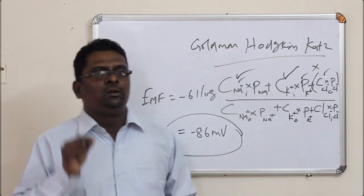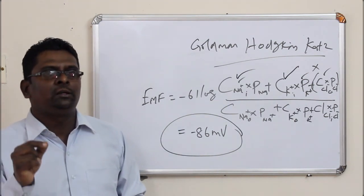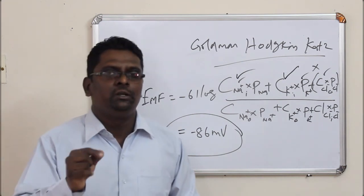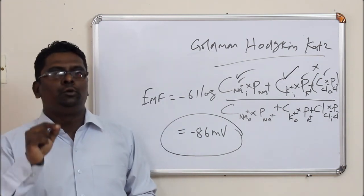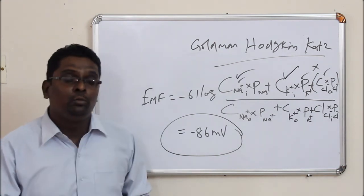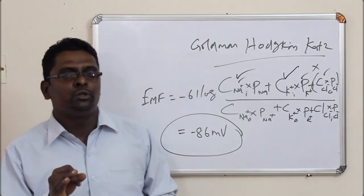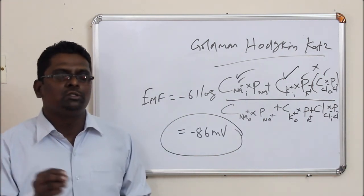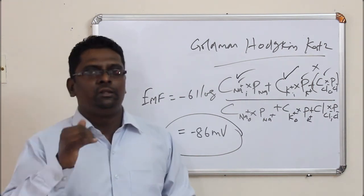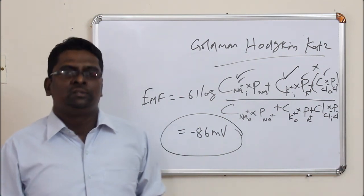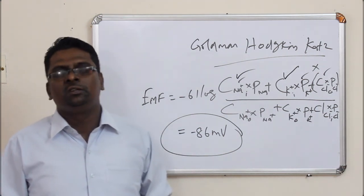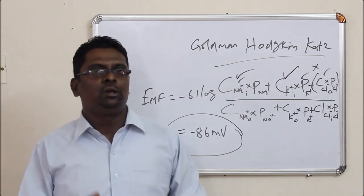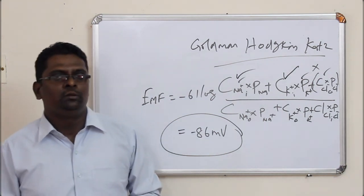To summarize: the Nernst equation is used to calculate the membrane potential inside the cell membrane when it is assumed to be permeable to only one ion. The Goldman-Hodgkin-Katz equation, or simply the Goldman equation, is used to calculate the membrane potential when the cell membrane is permeable to several ions — which is the actual case in our body.